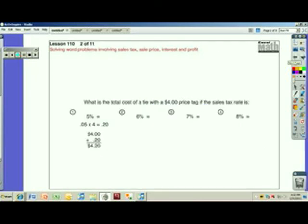What is the total cost of a tie with a $4 price tag if the sales tax rate is 5%? 5% means .05. Five hundredths. So this is .05 times the $4 gives us 20 cents in tax. $4 plus 20 cents is $4.20. The way you solve that is you do .05 times 4. That figures out your tax. You move over the decimal point two spots. So it's 20 cents in tax.